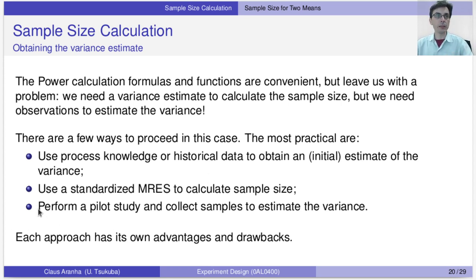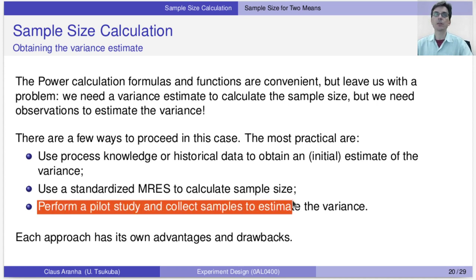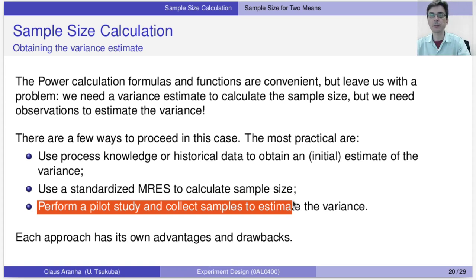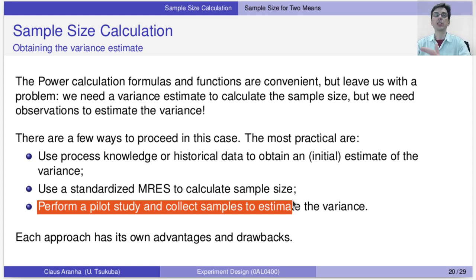A third option is to perform a pilot study and collect samples to estimate the variance. We then ask what the sample size of the pilot study should be — it usually does not need to be super big. Just notice that this is a different experiment: you do an initial experiment to learn the variance of a process, and then you do another experiment to actually investigate the effect you want to understand. Each approach has advantages and drawbacks.